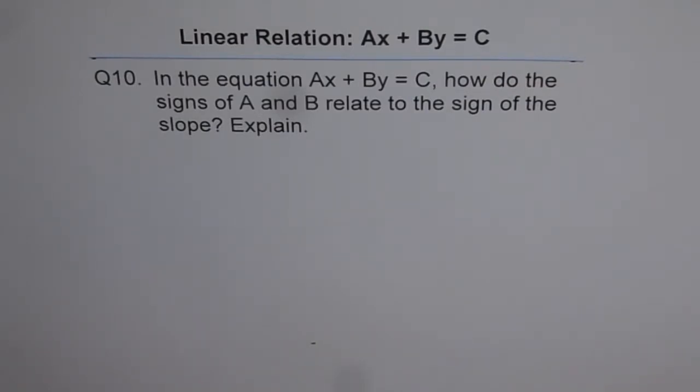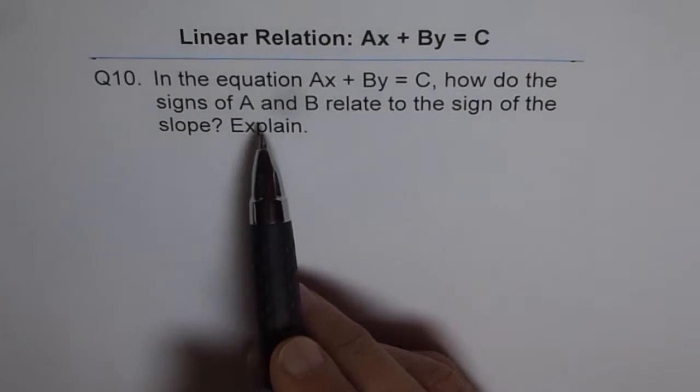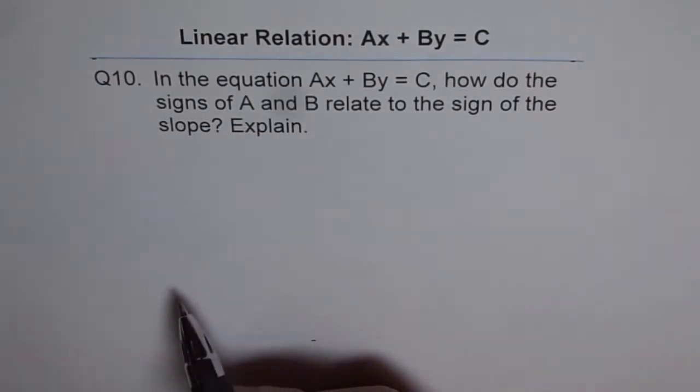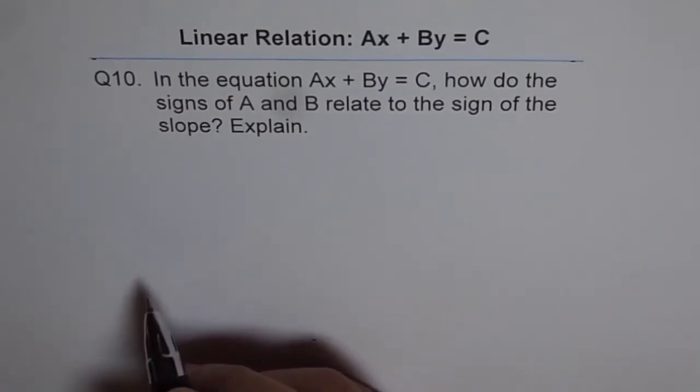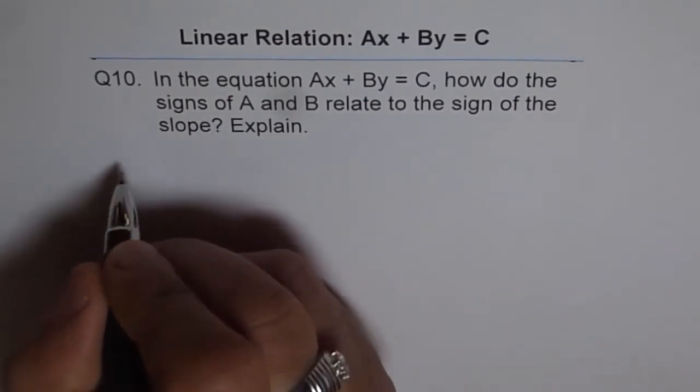And here is question number 10. In the equation AX plus BY equals to C, how do the signs of A and B relate to the sign of the slope? Explain. Let's try to analyze this. For that, it would be a good idea to write the equation in slope-intercept form. Let's do that part.